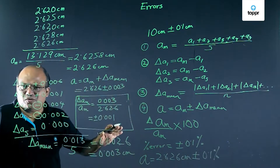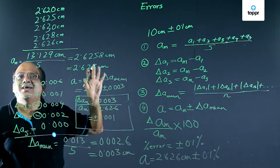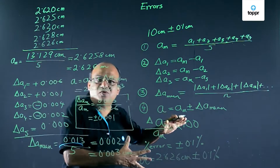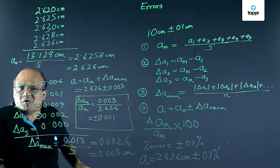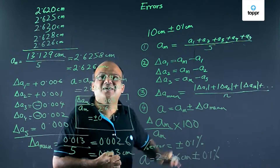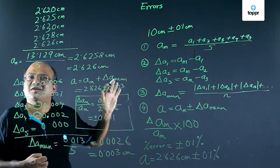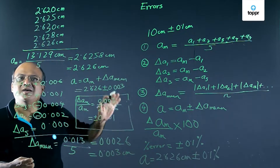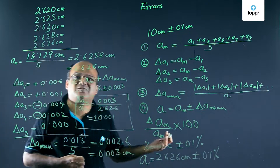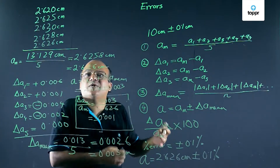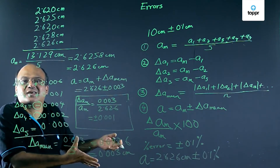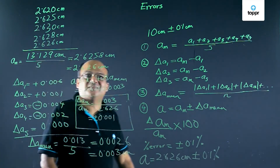So in this video, we have learnt about errors — the mean value of a reading, absolute errors in each reading, the mean absolute error, the fractional error, and the percentage error. In the next video, we are going to learn about the combination of errors: how to handle errors when adding, subtracting, multiplying, or dividing readings. Thank you.